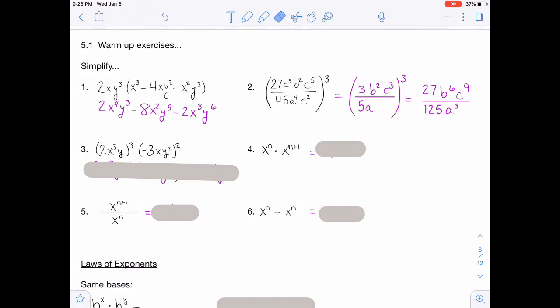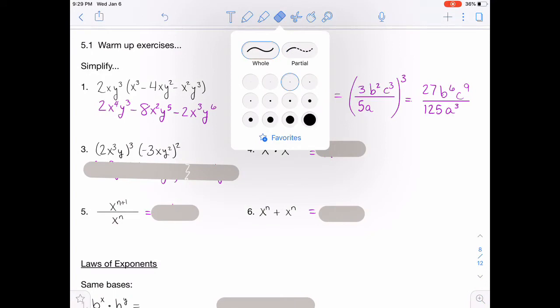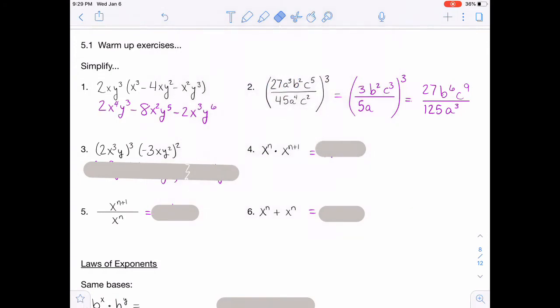All right, for number three, you're going to, I did a little bit of simplification there as well. For the first part, I cubed the 2 and the x to the third and the y. So then we'd have the 8 and x to the ninth and y to the third. And then for the second part, squaring that, you'd have a 9x squared y to the fourth. And then putting that all together, you would have 72x to the 11th and y to the seventh.